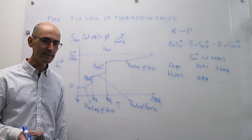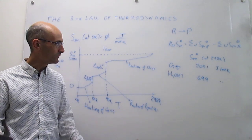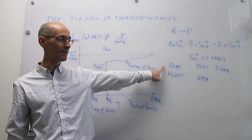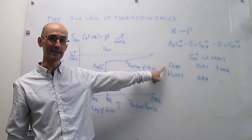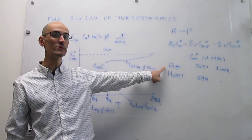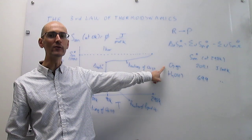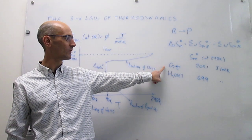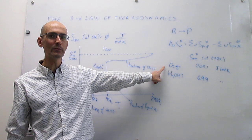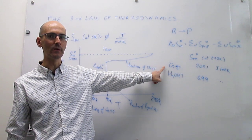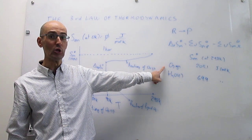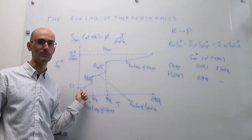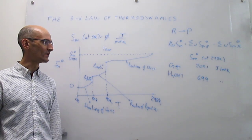A second detail: for the most stable allotropes of elements, like oxygen gas, these molar entropy values won't be zero. These numbers are very different from the enthalpies of formation, because we're not putting the zero at the most stable allotropes of elements — we're putting the zero where the third law tells us to.